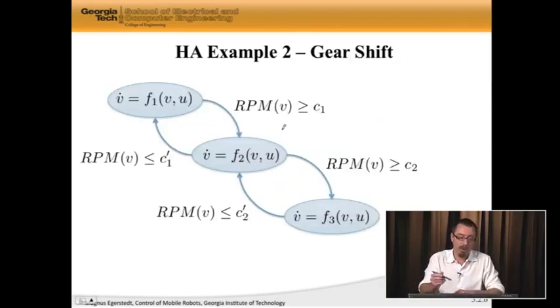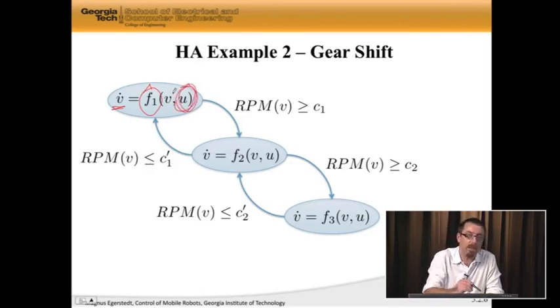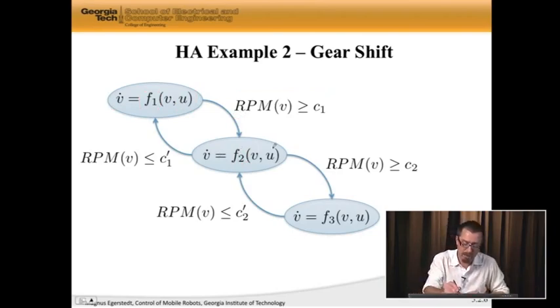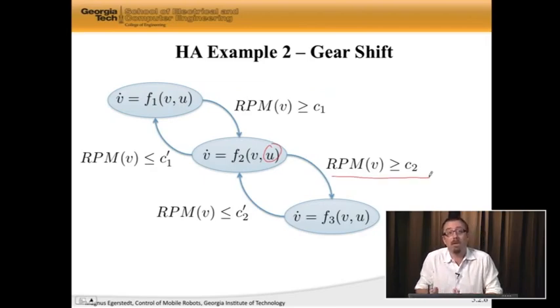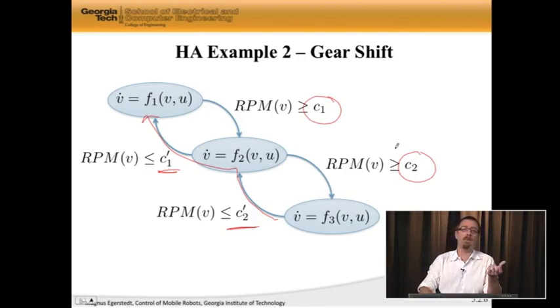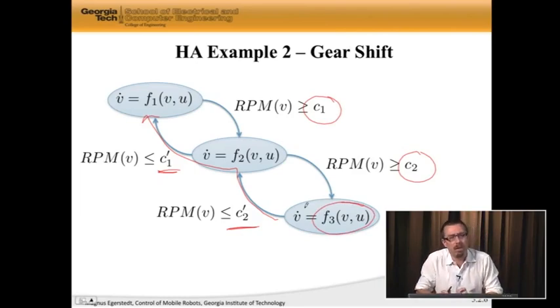Here's our gear shifter. We have some dynamics. V is the velocity of the car. We're now in first gear. This is our dynamics. U is how we're pressing the brake or the gas pedal down. When we have the RPM above some threshold, then we change gears. We switch up to second gear. If you keep pressing the gas so that the RPM goes up beyond some C2, then we switch to the third gear. Apparently this car only has three gears. But we go to the third gear, and the same thing here with a downshift. Notice that I have C2 prime and C1 prime, and C1 and C2 here. This is again because you want to build in a little bit of slack, so we don't immediately transition between gears. So this would be a hybrid automaton gear shifter.